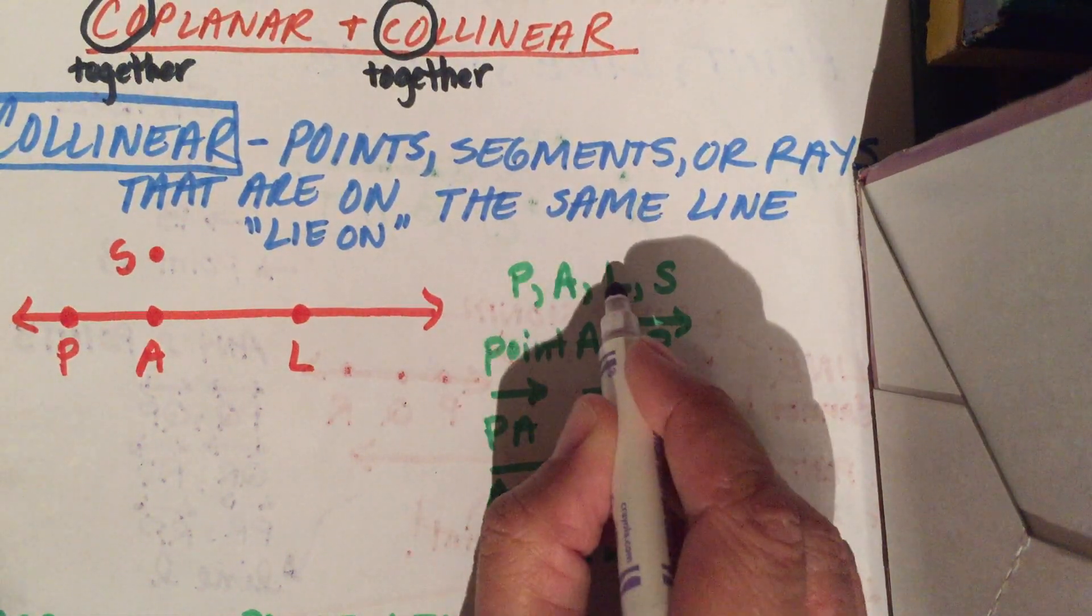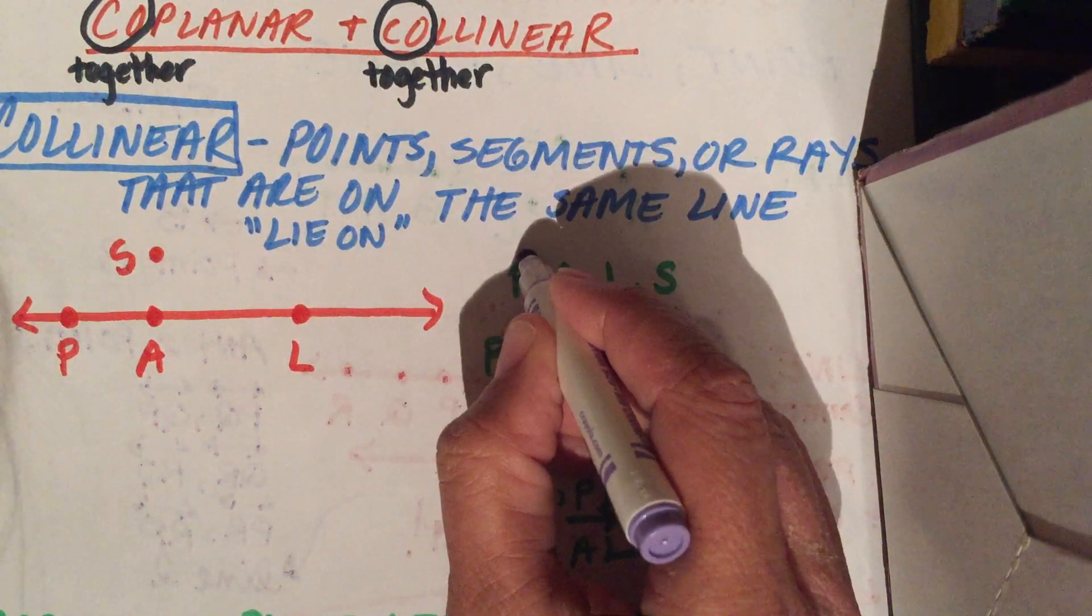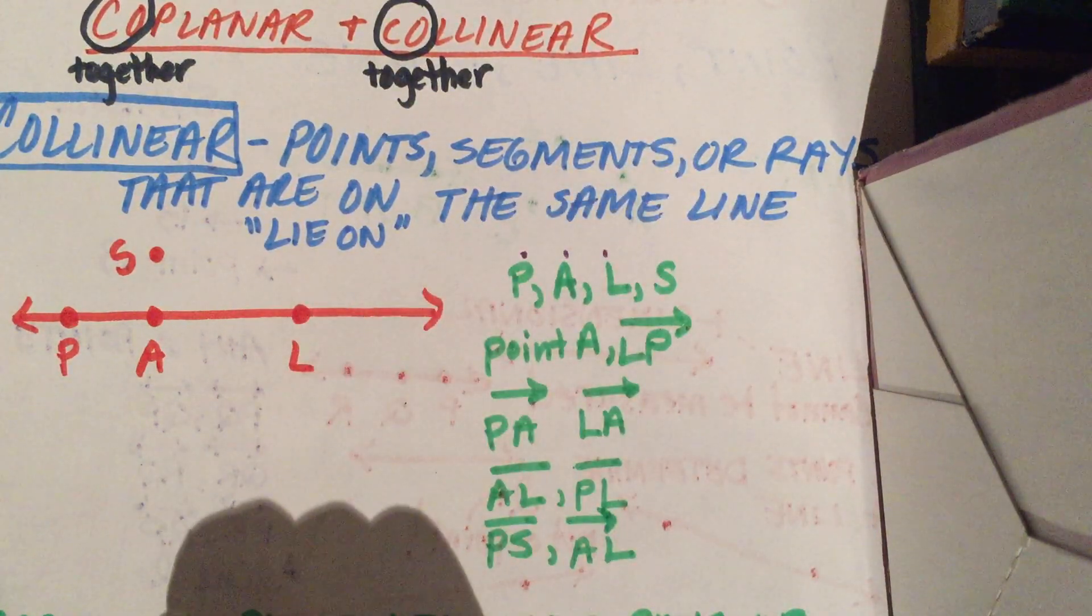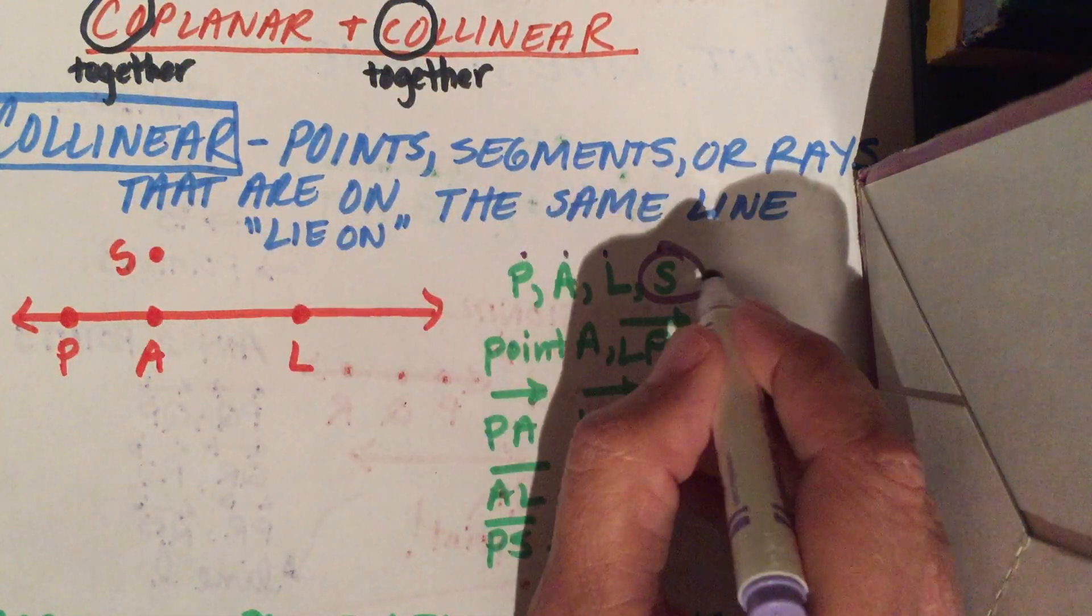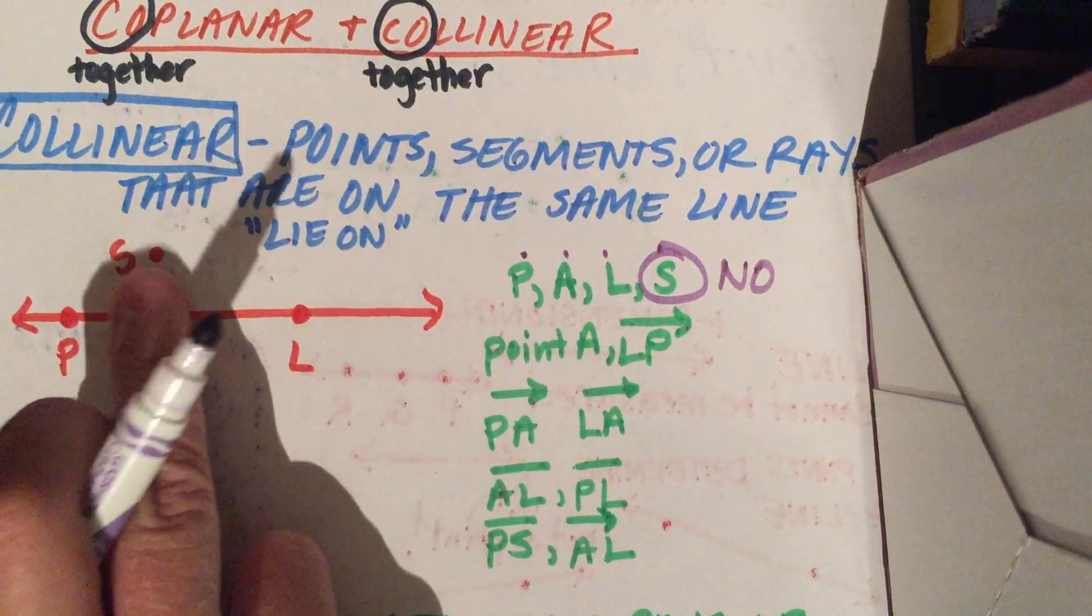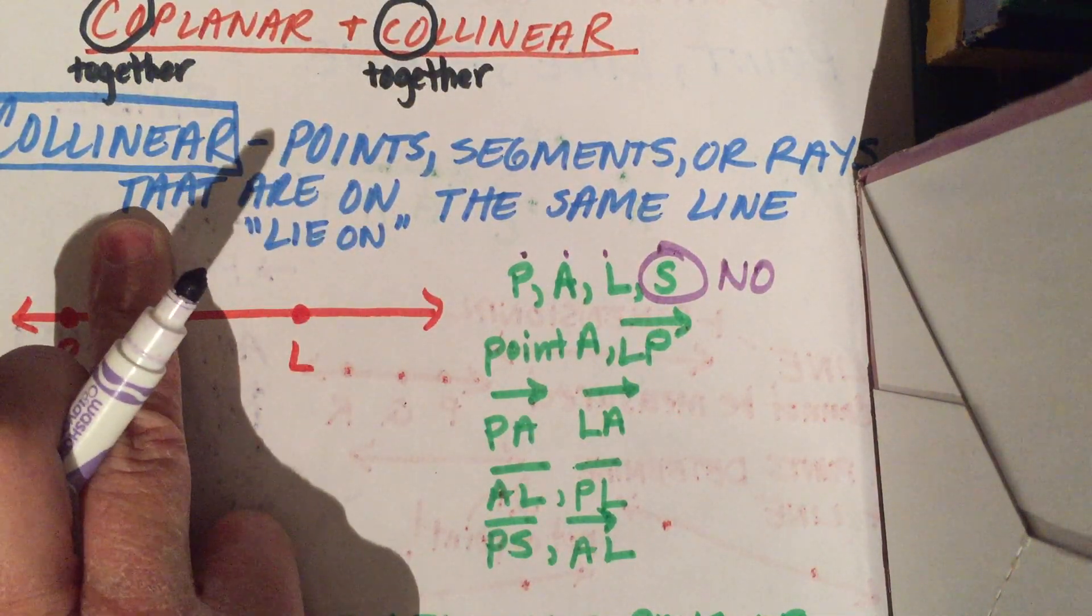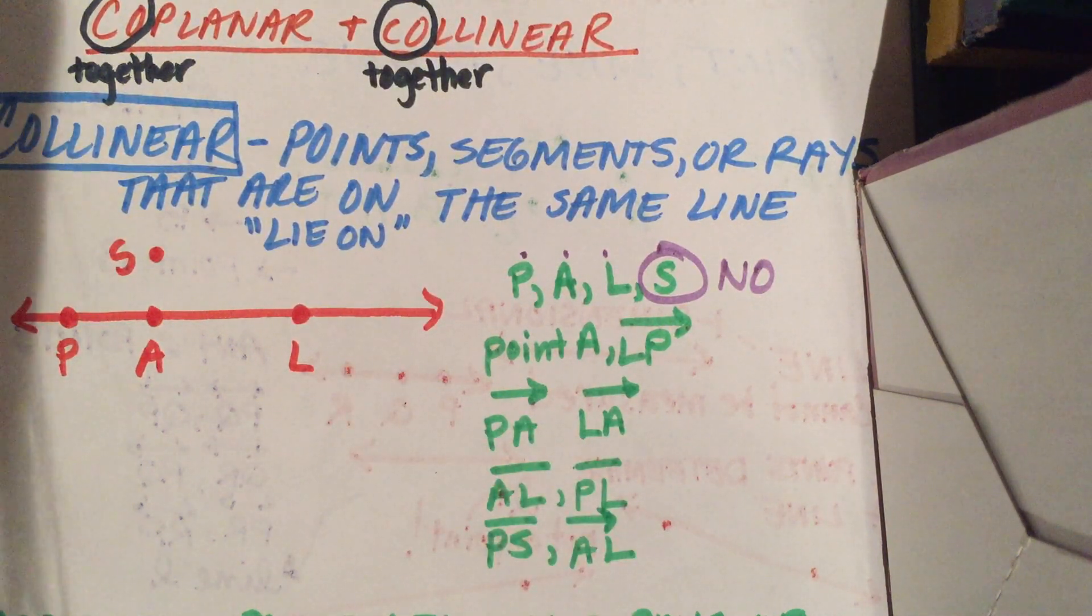Are P, A, L, and S collinear? If I just had P, A, L, the answer would be yes. But what's wrong with S? The S is not on the same line. So the answer is no. They are not collinear because the S is there. If I were to take the S out and just ask for P, A, L, yes, collinear, absolutely.